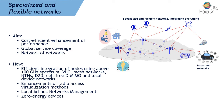Some enablers we're looking at in HEXA-X include efficient integration of nodes in frequency bands above 100 GHz, visible light communication, mesh networks, cell-free networks, and local device networks. We're also looking into enhancements of radio access virtualization methods, local ad-hoc network management, and zero-energy devices — especially for sustainable coverage of large areas and use cases like the Earth Monitor.